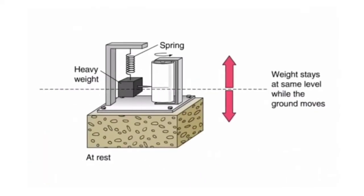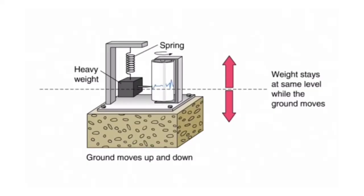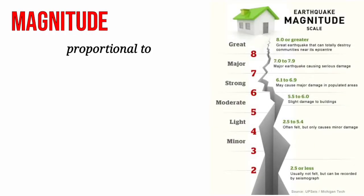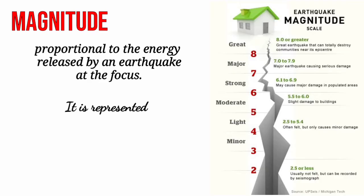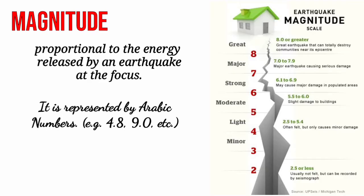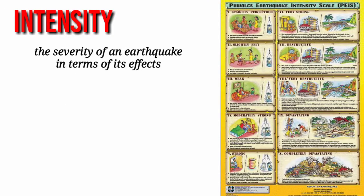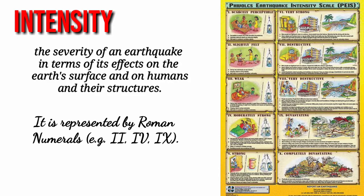The location directly above on the surface of the earth is called the epicenter. The device used to measure earthquakes is called a seismometer. There are two ways by which we can measure the strength of an earthquake: magnitude and intensity. Magnitude is proportional to the energy released by an earthquake. The strength of an earthquake increases as the magnitude increases. It is represented by Arabic numbers. Intensity refers to the severity of an earthquake in terms of its effects on the earth's surface and on humans and their structures. The intensity is generally higher near the epicenter. It is represented by Roman numerals.